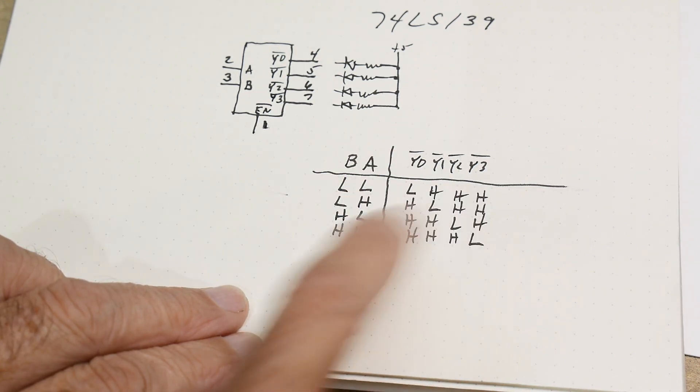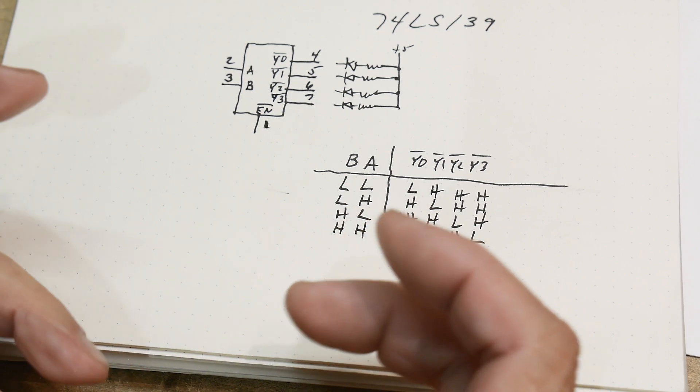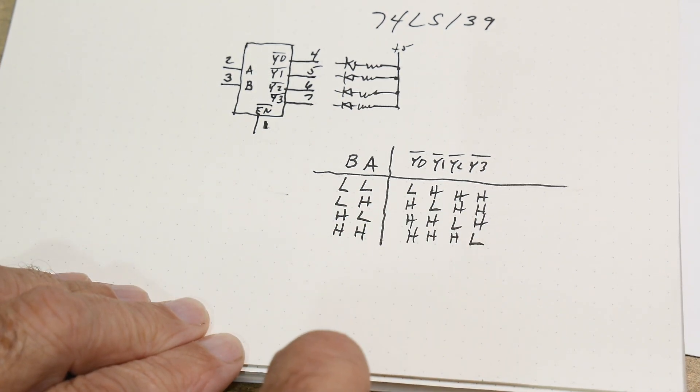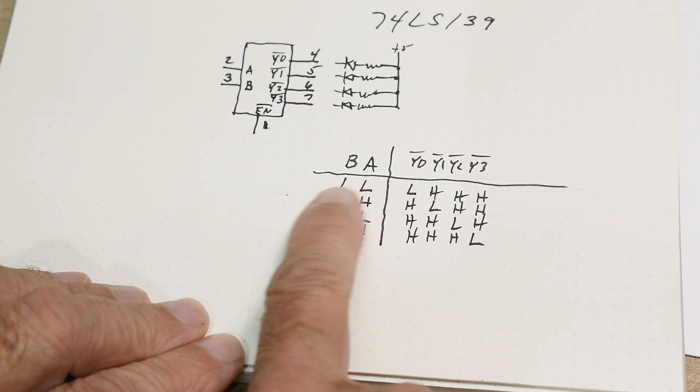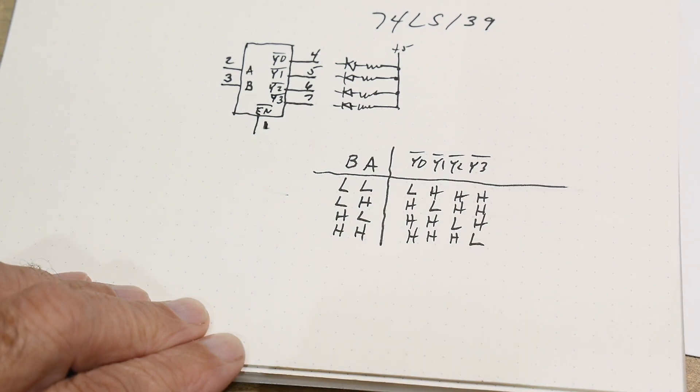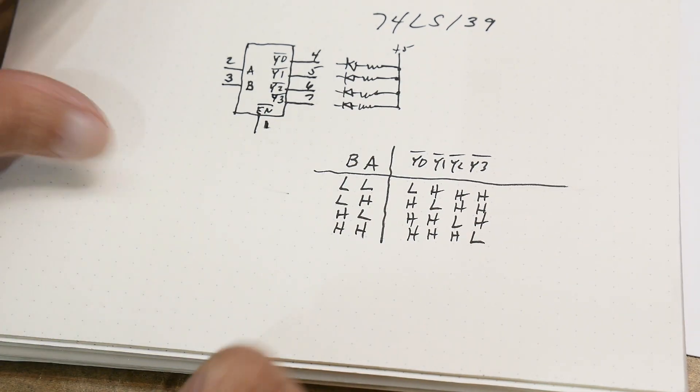So one, two, three, four. So you can imagine you have four banks of RAM and you can enable these four banks of RAM and you use the address on these inputs.